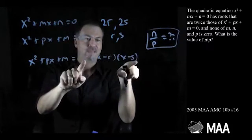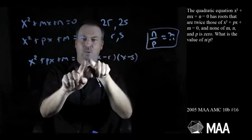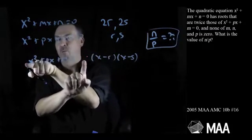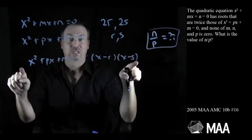However, if I expand this out, x times x is x². I get a single x² which is what I want, so there's no number in front. This is actually it: x²+px+m = (x-r)(x-s).